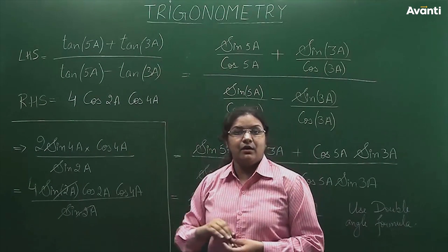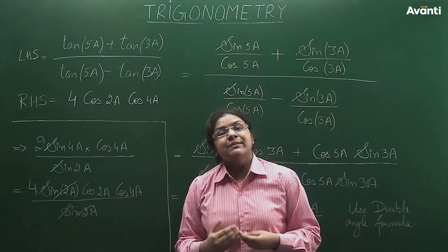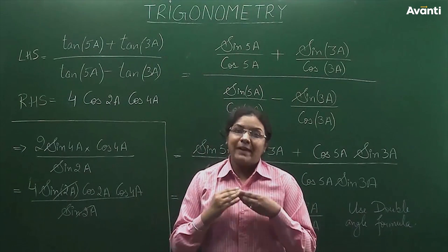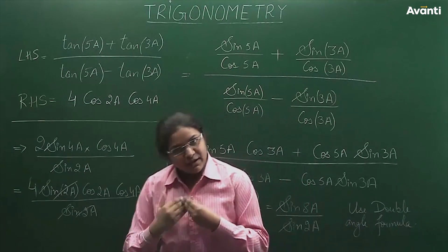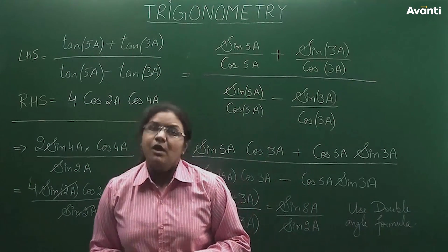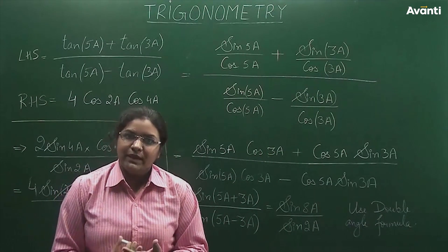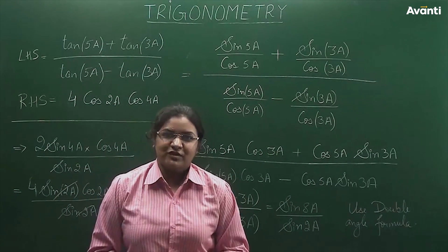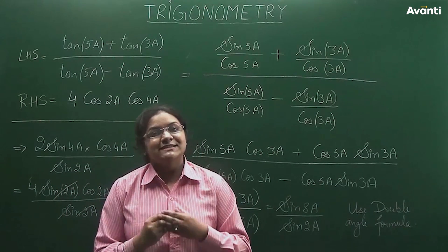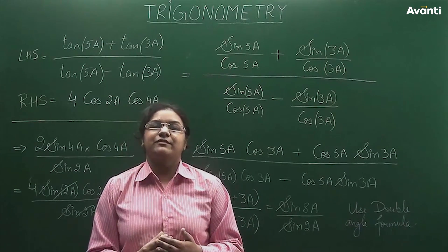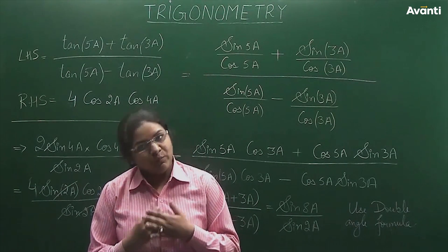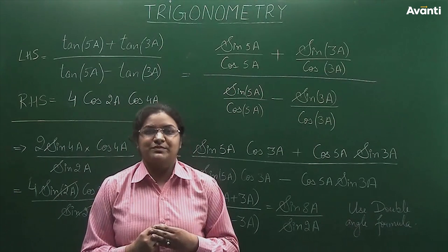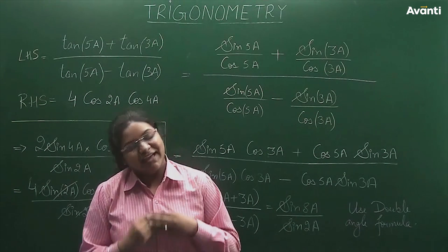Whenever you have an expression in which tan is given and you have to convert it to the right-hand side, first break it down in the form of sine over cosine. Then apply whatever standard formulas you know. In this way, almost all tan problems are solved. I hope you understand this and can solve more problems on this. Thank you.